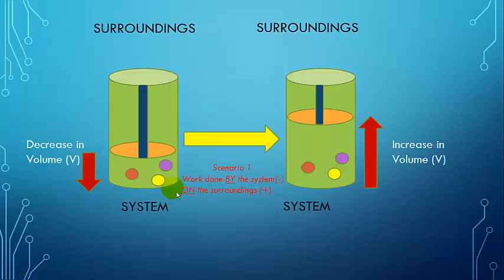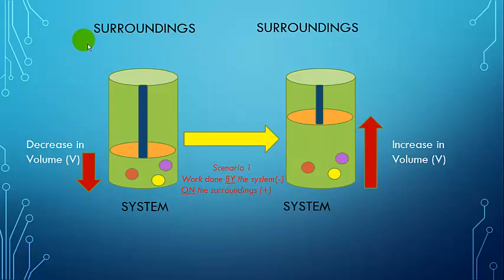One of the main focuses of this lecture has to do with the interaction of the system with the surroundings. In Scenario 1, we have gas molecules that have expanded, which raises the piston up, resulting in an increase in volume. Here, work is done by the system on the surroundings through pressure-volume work. As a result, the work function for the system takes a negative value.